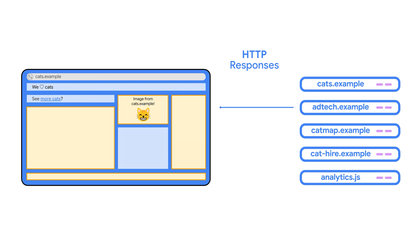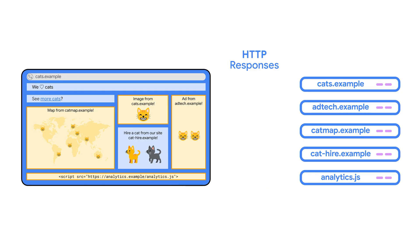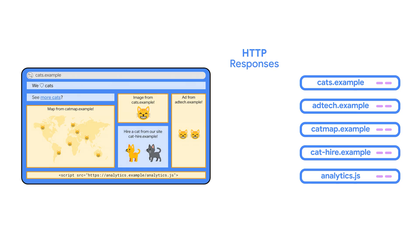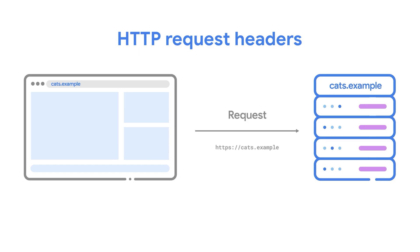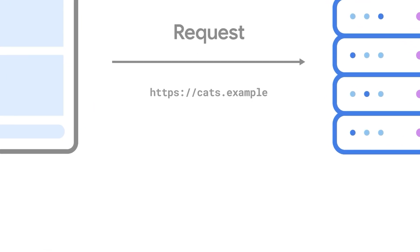When an HTTP server — a server that hosts a website — receives a valid HTTP request from a browser, the server responds with an HTTP response. Requests and responses can include extra information known as HTTP headers. HTTP request headers provide supplementary information from the browser to the web server. For example, the request for the cats.example homepage might include headers like the ones I'll show you now. This header indicates the user's preferred language — in this case, English United States.